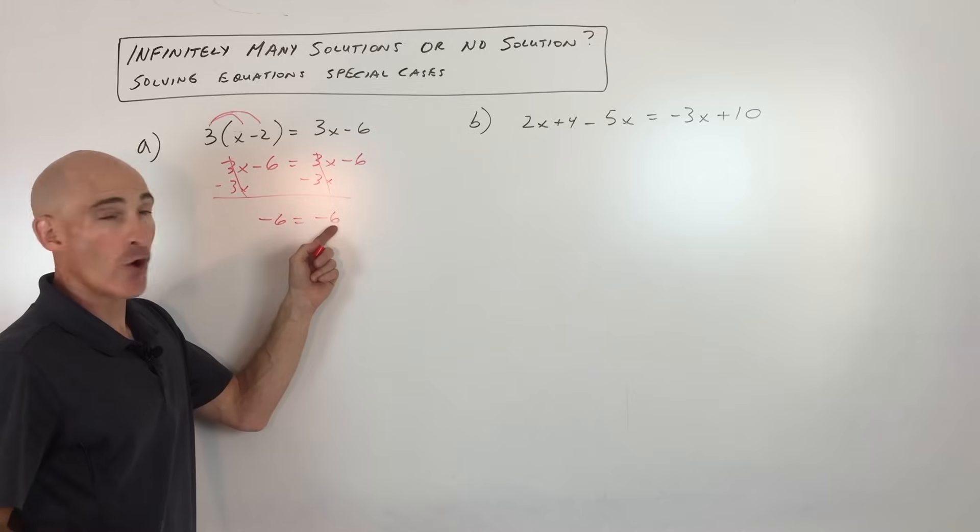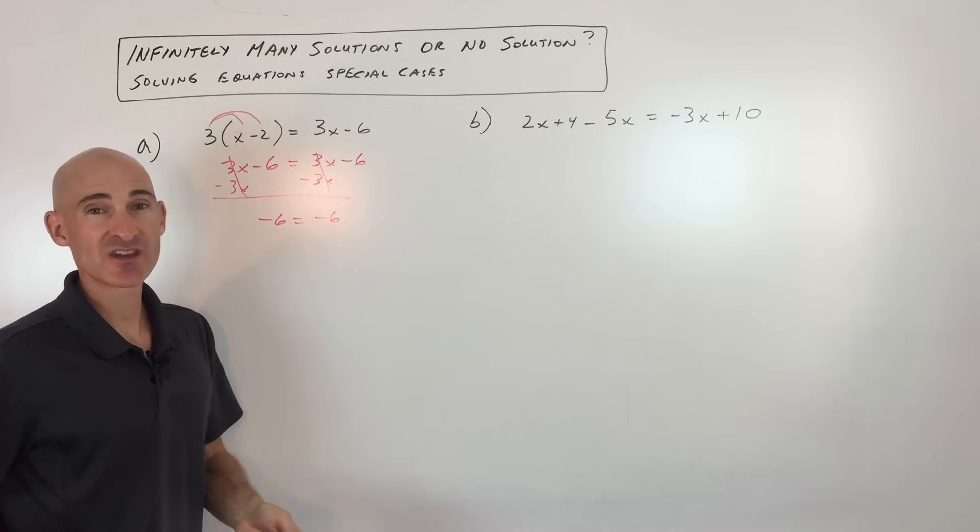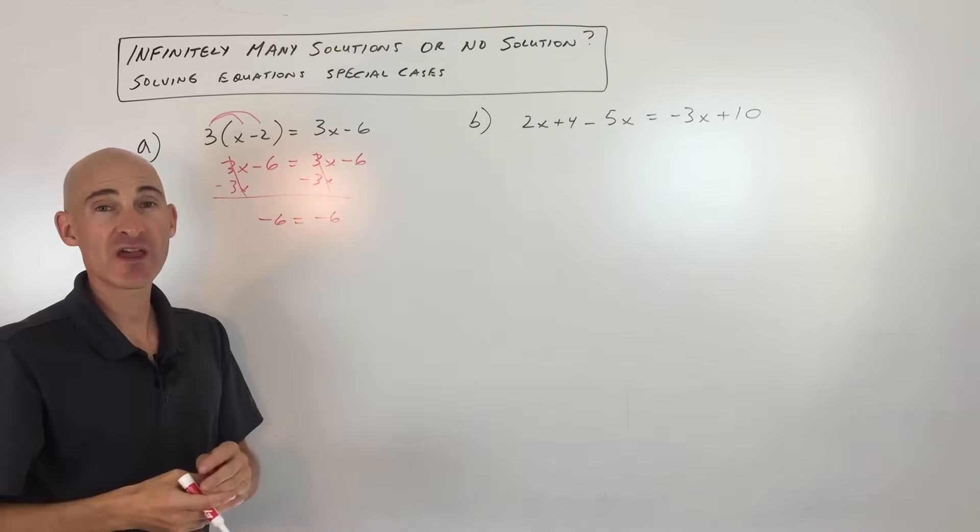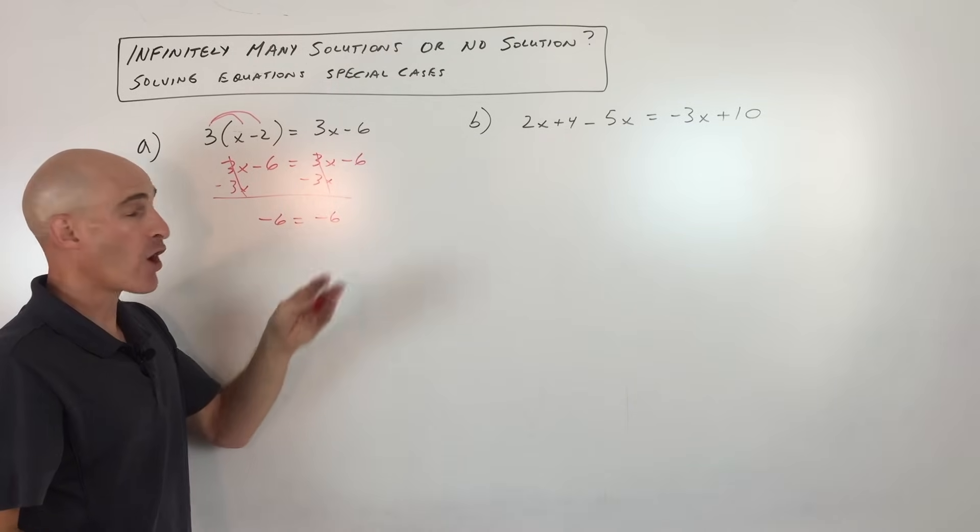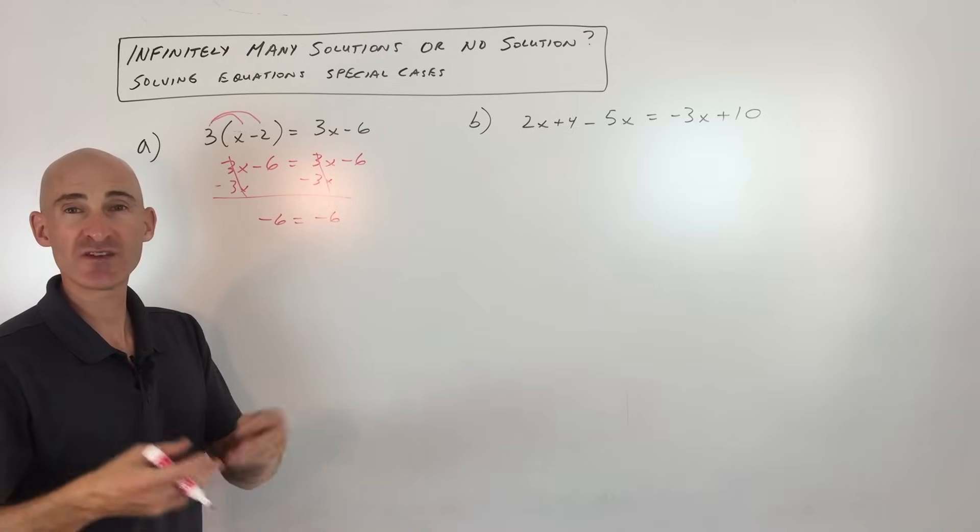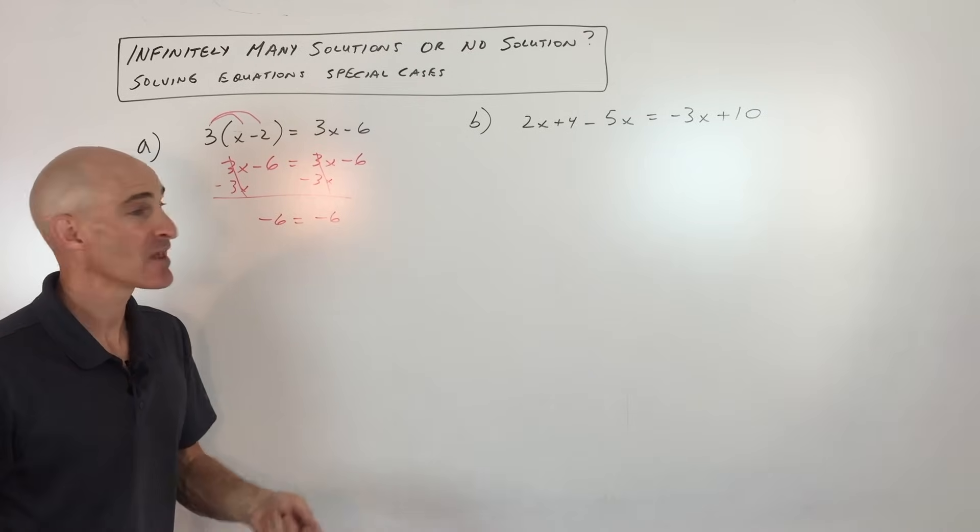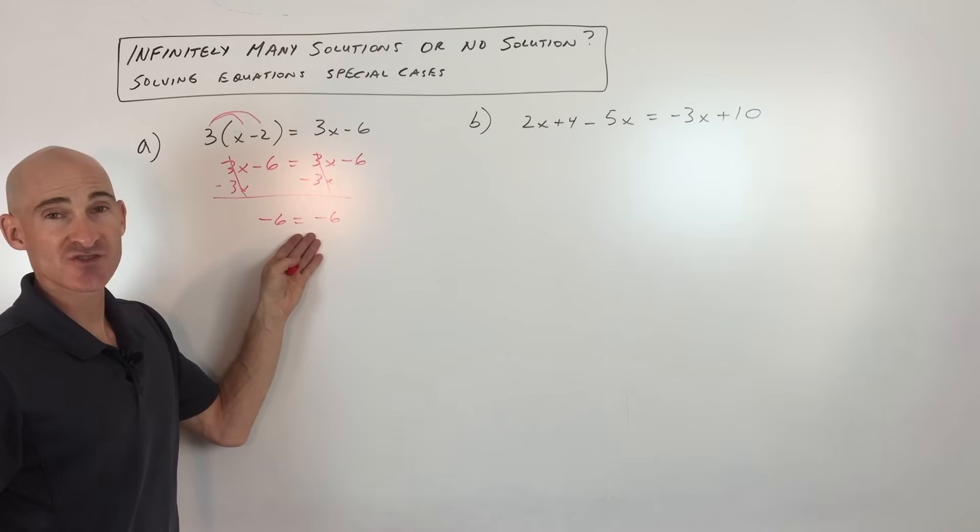Well, one thing you notice is that this is always true. Negative 6 will always equal negative 6. It doesn't matter. The variable doesn't even come into play here. It's canceled out on both sides. So you can tell from this case, all real solutions, all real numbers, infinitely many solutions, however you want to say it. That would be the answer to this problem.